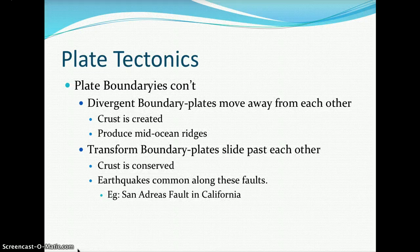At a divergent plate boundary, plates move away from each other. This is what we saw with seafloor spreading, where the Mid-Atlantic Ridge is producing new crust that moves away from the ridge, and as it moves away, the crust gets older in age.